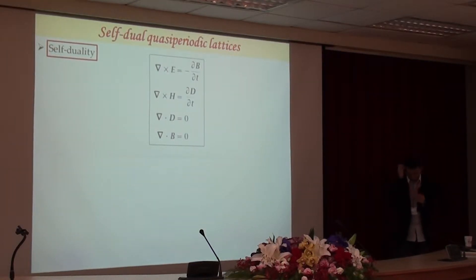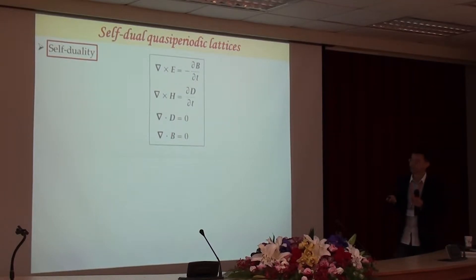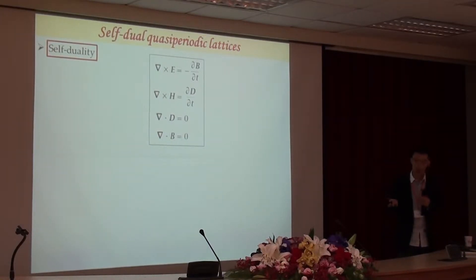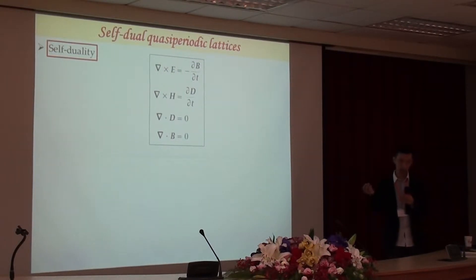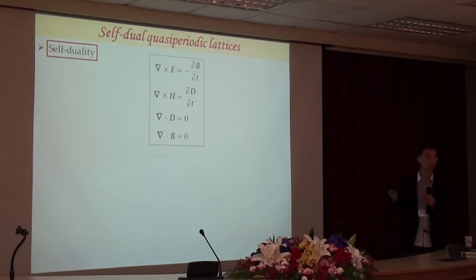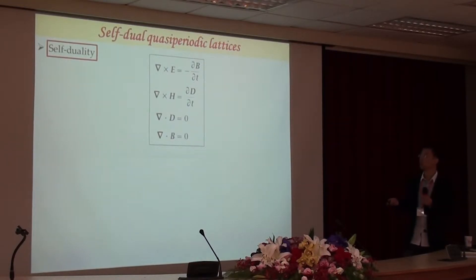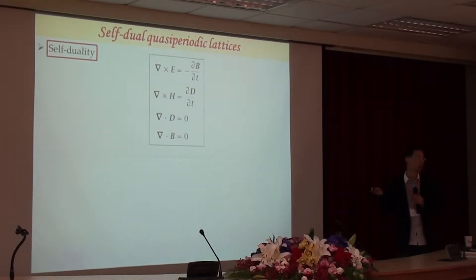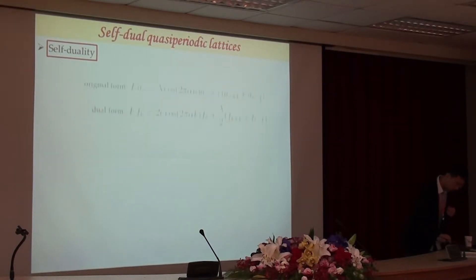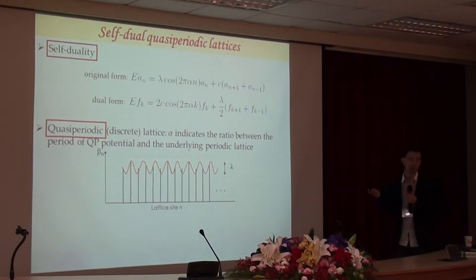Why is this quasi-periodic model different from the conventional 1D Anderson model? The reason lies in two properties: self-duality and quasi-periodicity. Regarding self-duality, we can make a transformation of the equation such that the original form is the same as the dual form. A famous example is the Maxwell equations — you can exchange the magnetic and electric fields and the equation remains the same. For the Aubry-André model it is the same story.